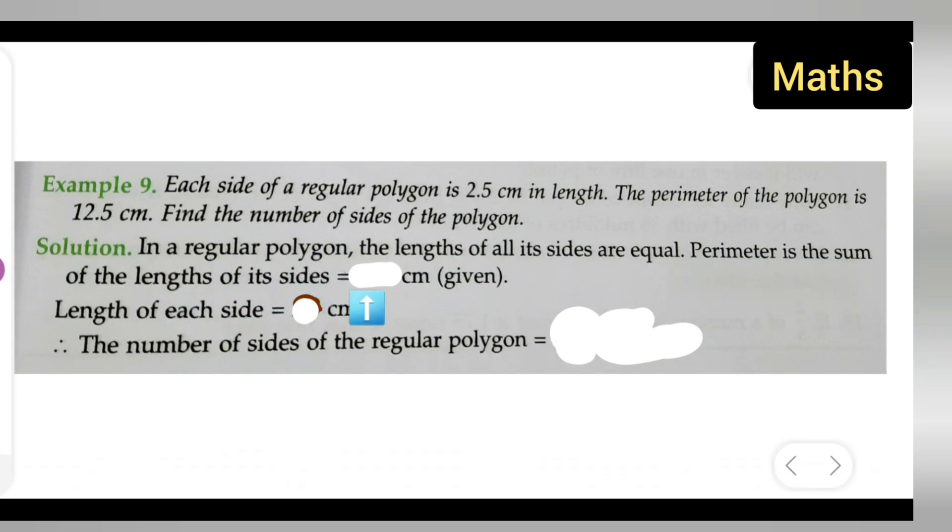The perimeter is given: 12.5 centimeters. Next, the length of each side is also given, that is 2.5 centimeters. So the length of each side is 2.5 centimeters. Therefore, the number of sides of the regular polygon is 12.5 divided by 2.5.